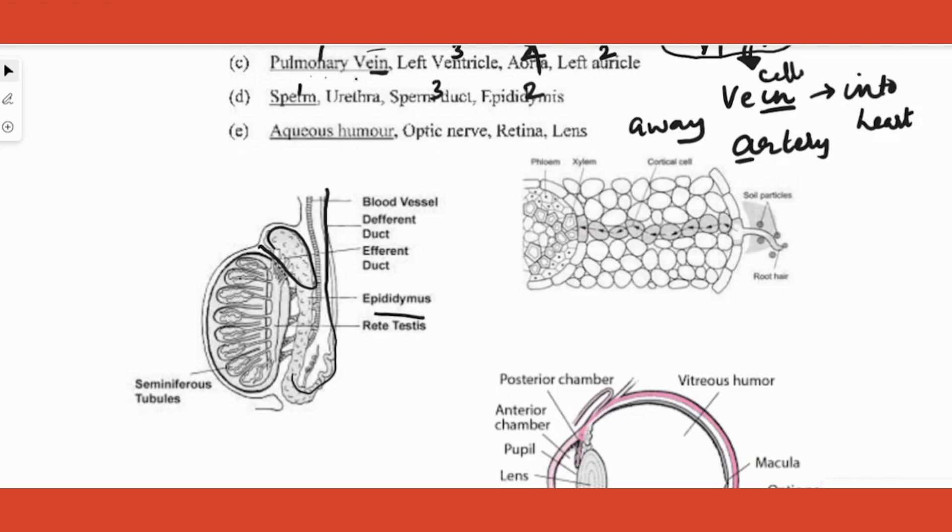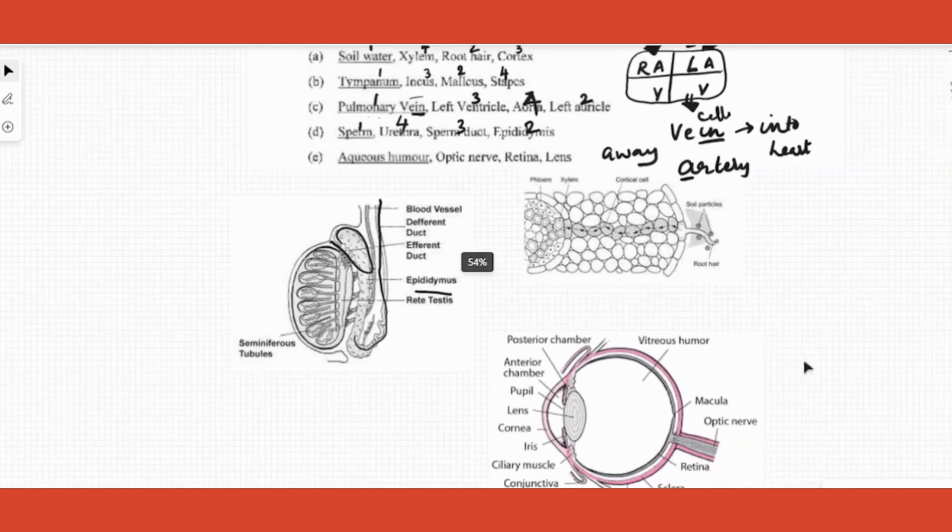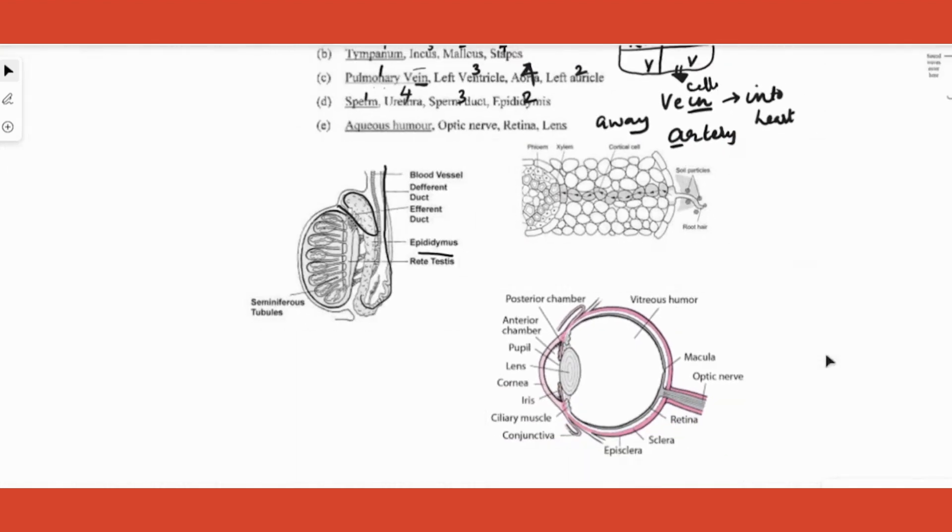Last question: aqueous humor, optic nerve, retina, lens. For that we should know the diagram properly, the diagram of cross-section of the eye. Here is your aqueous humor, number one they have already fixed it. Where does light go after that? It goes into lens, then to the vitreous humor, but that term is not given here. What's the next term? It goes on to the innermost layer of your eye called the retina. From retina it should go to the optic nerve. This is how you do logical sequence questions.